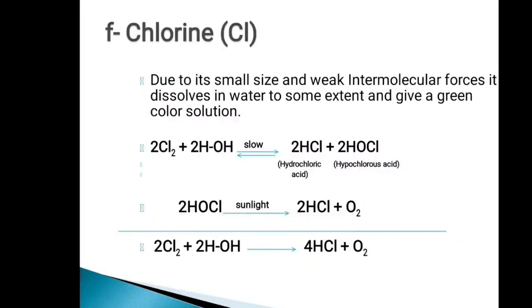Hydrochloric acid is a stable acid, but hypochlorous acid is an unstable acid. In the presence of sunlight, hypochlorous acid dissociates to give hydrochloric acid with the release of oxygen gas. The net reaction tells us that when chlorine dissolves in water, the products are hydrochloric acid and oxygen gas.